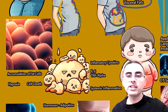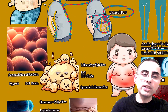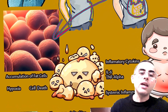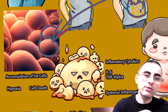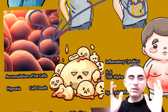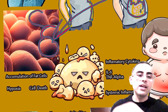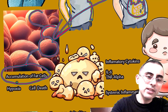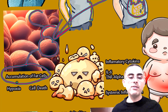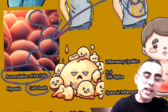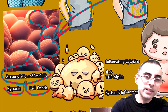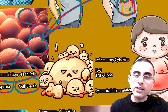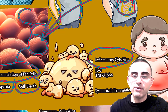Why is visceral fat so dangerous? Because it is metabolically active. Imagine fat cells accumulating and growing until they reach a point where they start depriving themselves of oxygen — this is called hypoxia. These fat cells start starving and dying because of hypoxia and starvation.